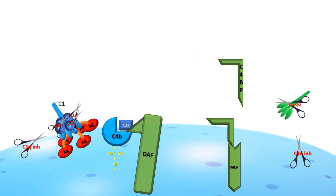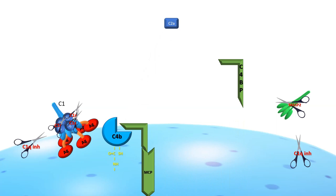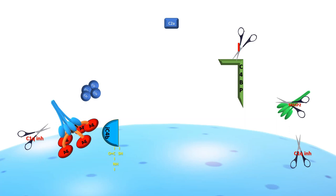The classic and the lectin pathways are also regulated by C1 inhibitor, which dislocates the C1R and C1S fragments from C1Q fragment, respectively MASP2 from membrane binding lectin, inactivating them. The regulation of the alternative pathway will be exposed below.